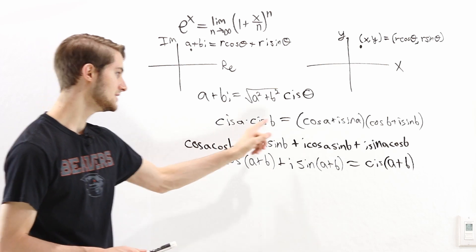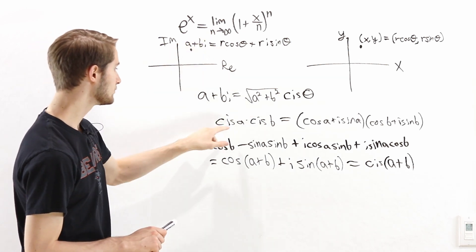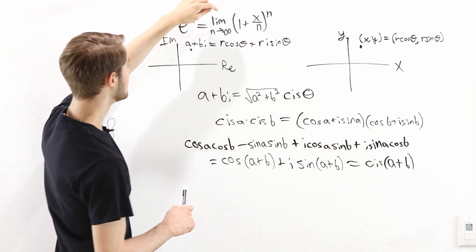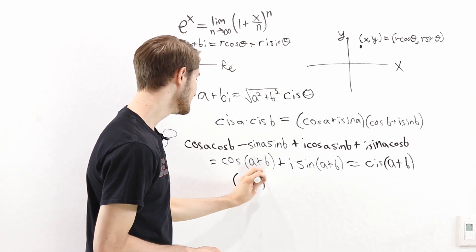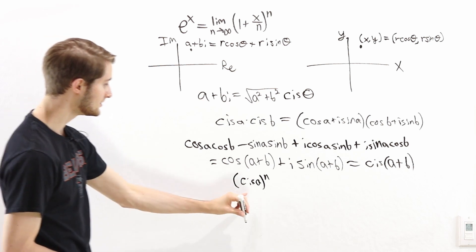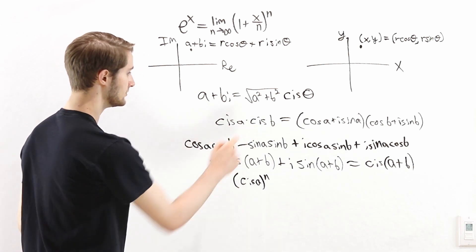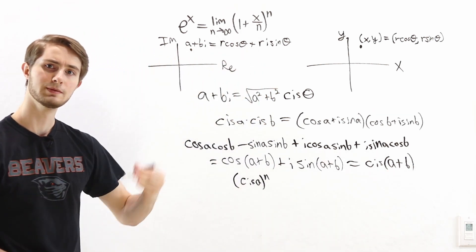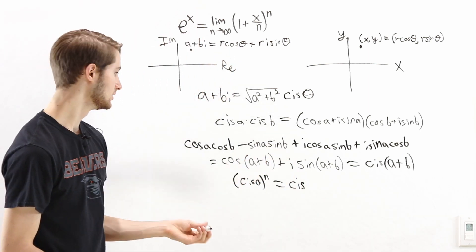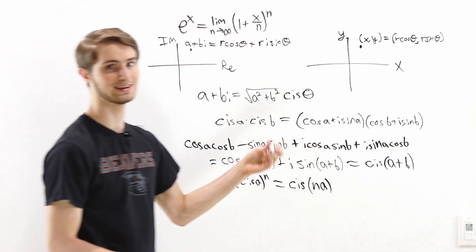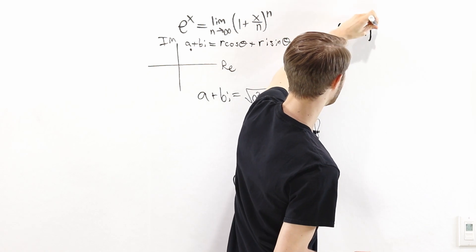By the definition of cis, this is cis of a plus b. So we get cis(a) times cis(b) equals cis(a plus b). Extending this idea: if we raise cis(a) to the power of n, that's multiplying cis(a) by itself n times. Every time we multiply, we add the angles. So raising cis(a) to the power of n means adding the angle to itself n times, giving cis of n times a. This formula lets us raise cis to any power we want.